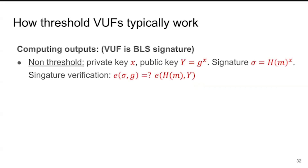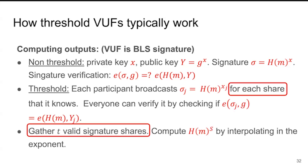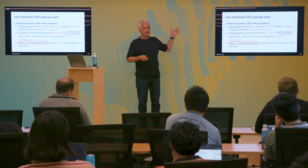For the VUF, the usual approach uses BLS signatures. Without a threshold, the private key is x, the public key is g^x, and the signature/VUF output is H(message)^x, verifiable using pairings. In a threshold setting, each participant broadcasts H(message)^{share_i}, then interpolation in the exponent recovers H(m)^secret. The problem is this requires broadcasting a message per share, and with up to 1000 shares, this is too much to broadcast and verify every second.